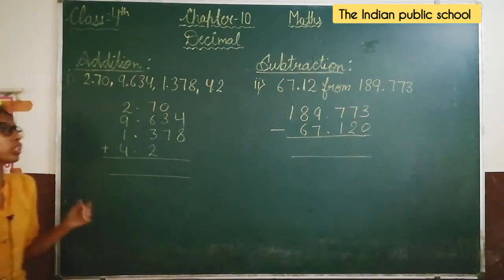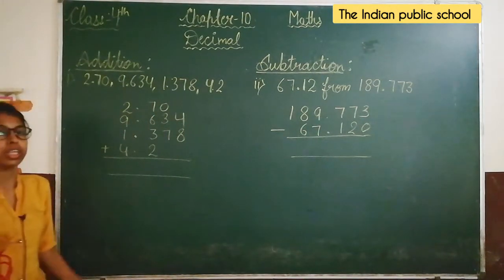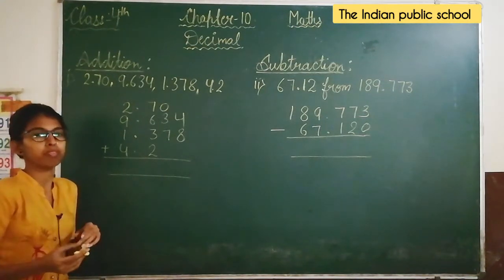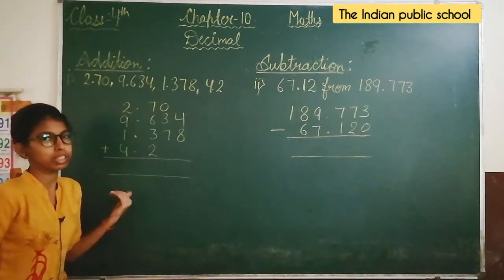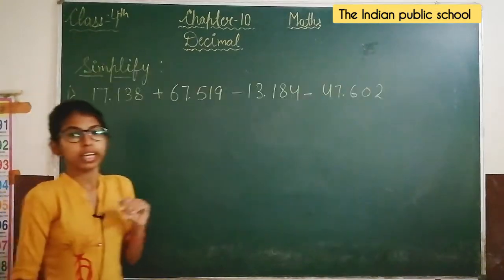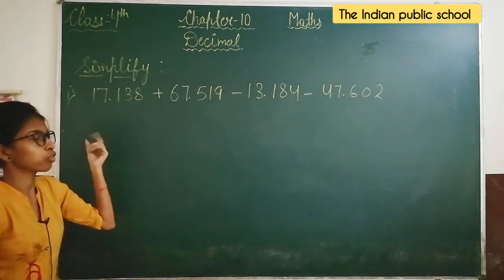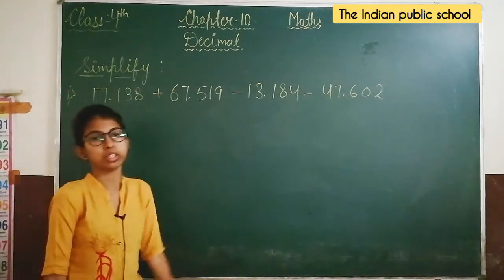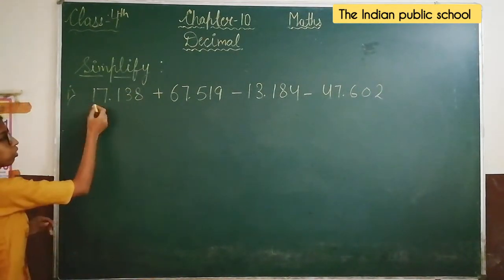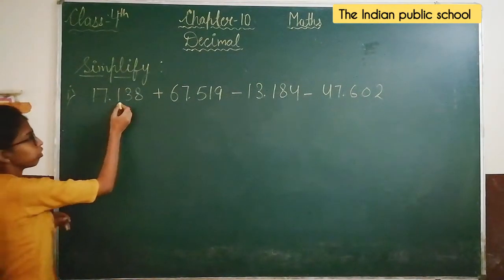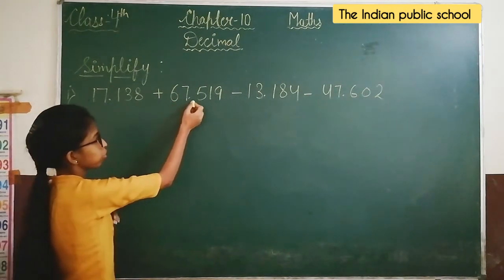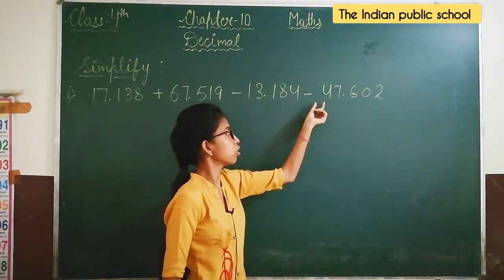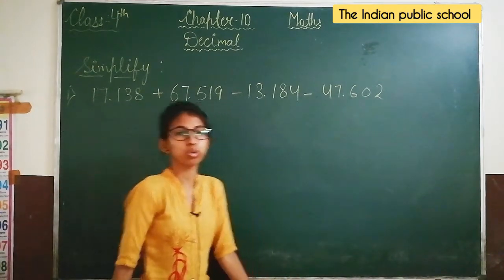Now we will do the simplification of this portion. In this portion, addition and subtraction symbols will be given together. The next portion is simplification of the given decimal numbers. There is a plus and minus sign given. The first number is 17.138 plus 67.5, and then minus 13.184 minus 47.602.